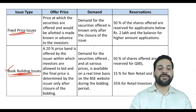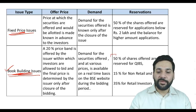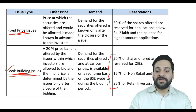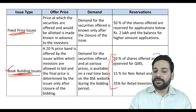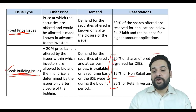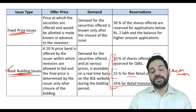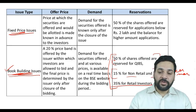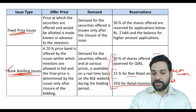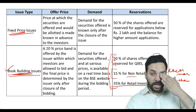In the book building process: 50% of shares are reserved for QIBs, 15% are reserved for non-retail investors — those investing two lakh rupees or more — and 35% of lots are reserved for retail investors — those investing less than two lakh rupees.